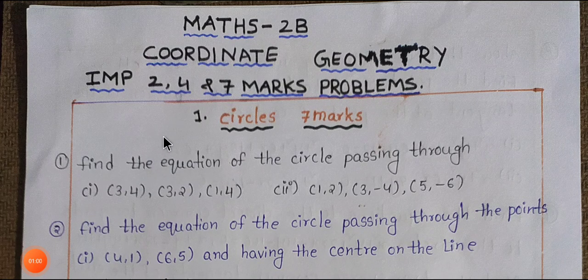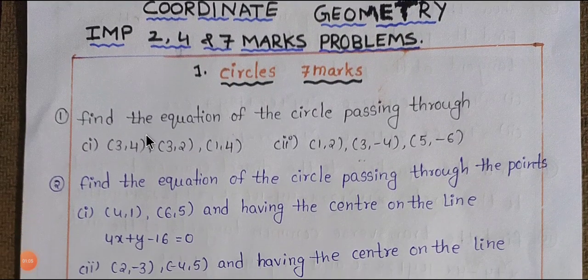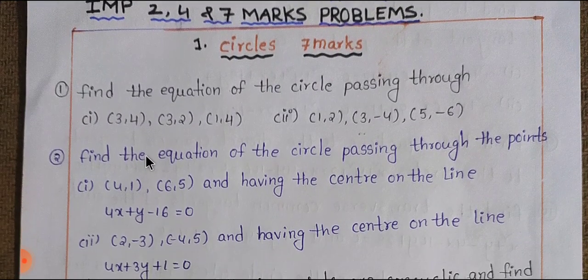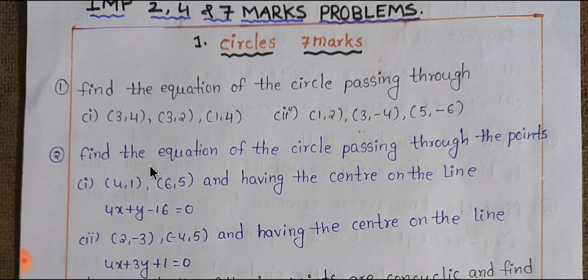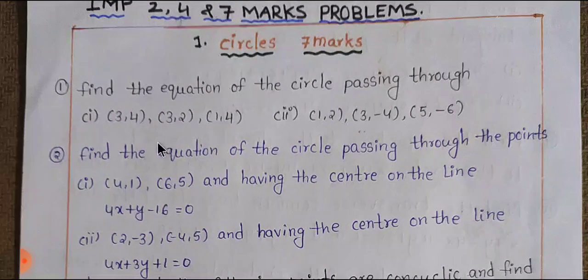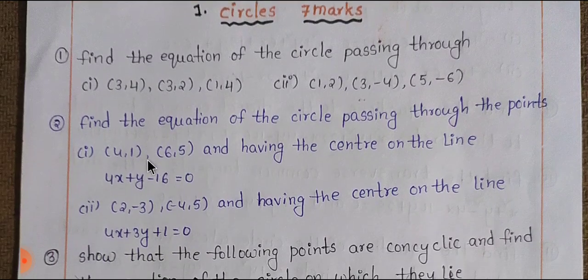Students, Maths 2B coordinate geometry important 2, 4, and 7 marks problems. First one: Circles. In Circles, you have 2 seven-mark problems, 1 four-mark problem, and 1 two-mark problem. First one is 7 marks.